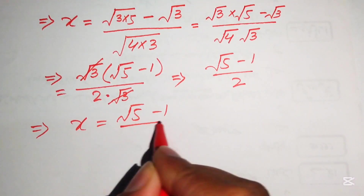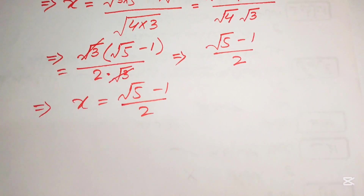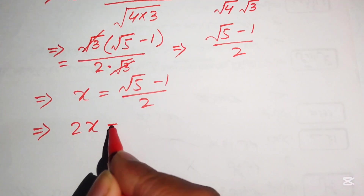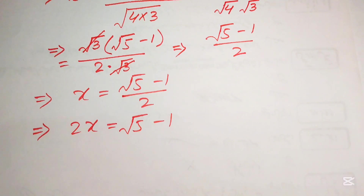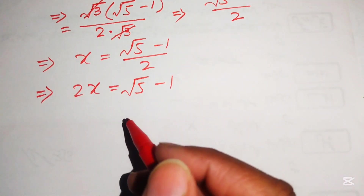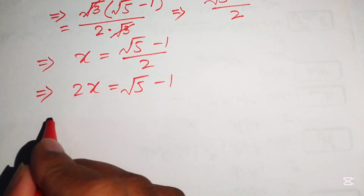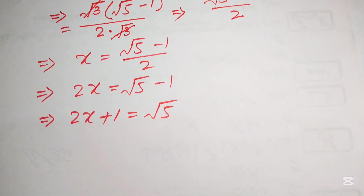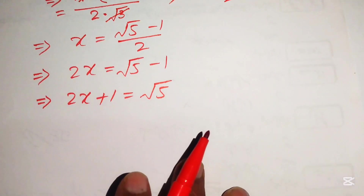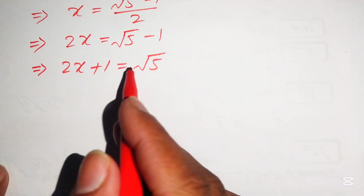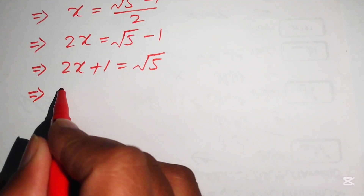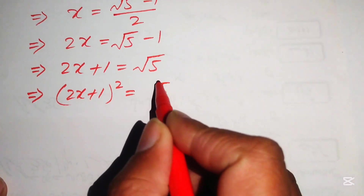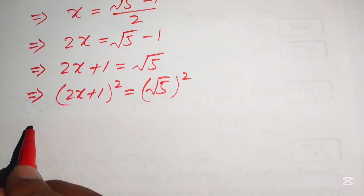We have x equals (square root of 5 minus 1) divided by 2. Moving 2 to the left-hand side gives 2x equals square root of 5 minus 1. Moving minus 1 to the left-hand side gives 2x plus 1 equals square root of 5. To remove the square root sign on the right-hand side, we square both sides of the equation, giving (2x plus 1) whole square equals (square root of 5) whole square.